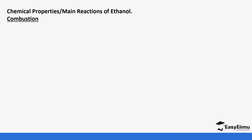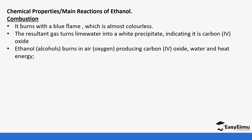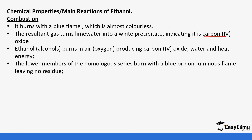One of the properties is combustion. Alcohols will burn with a blue flame — ethanol especially burns with a blue flame which is almost colourless. The limewater test usually turns limewater to a white precipitate, which tells you that carbon dioxide is produced, because that is the test for carbon dioxide. Ethanol burns in air producing carbon dioxide, water, and heat.